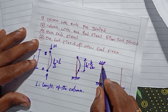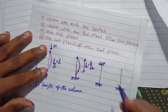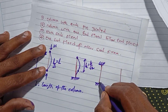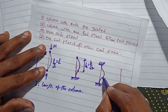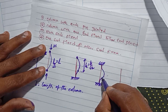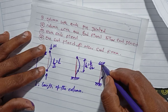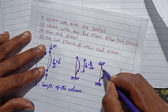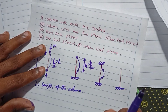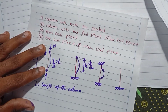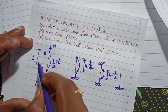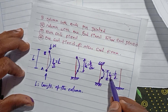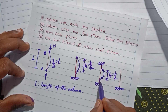For the third case, both ends fixed: here we can observe two points of inflection in the buckled profile. The effective length is equal to L by 2 — Le = L/2. Fixed supports are stronger, so failure chances are weaker and the effective length is smaller, meaning fixed supports provide better resistance to buckling.